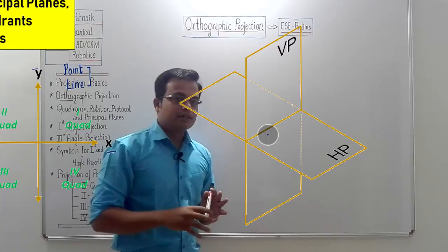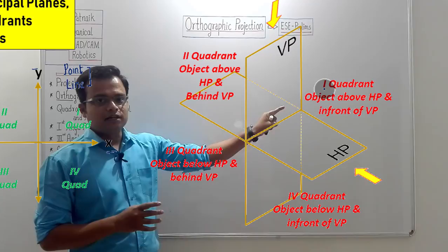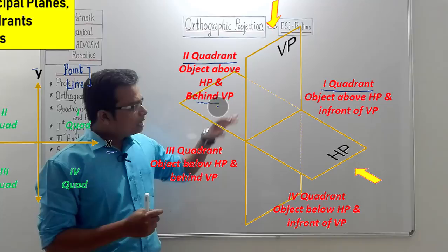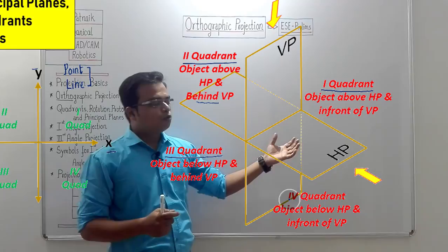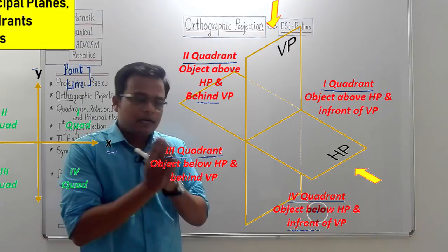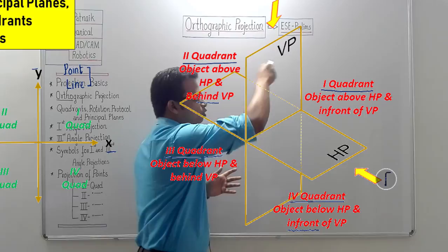Let me define all four quadrants. In quadrant one, the object is above HP and in front of VP. In quadrant two, the object is above HP but behind VP. In quadrant three, the object is below HP and behind VP. In quadrant four, the object is below HP but in front of VP. This is how you represent any point or object in the four quadrants.